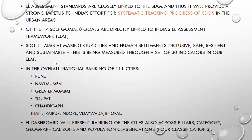Along with the Ease of Living Index, an Ease of Living Dashboard has been launched which shows the present ranking across different pillars, categories, geographical zones, and population classifications. Population classification is distributed into four categories. The EL dashboard shows city rankings across all these dimensions.